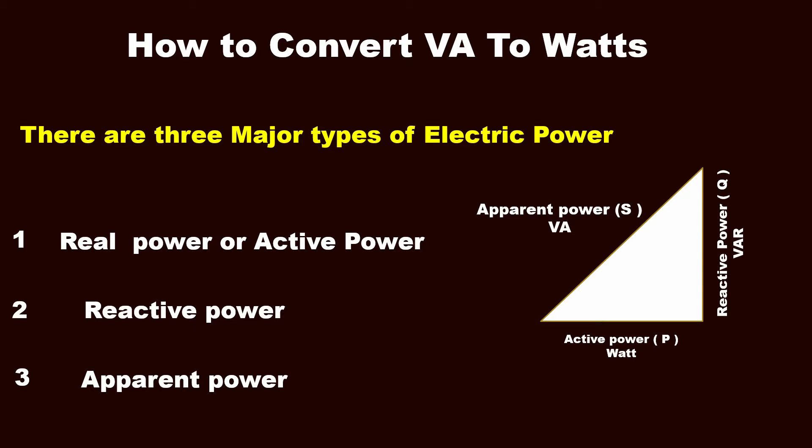Apparent power is denoted by S and its unit is volt-ampere or VA. Real power is denoted by P and its unit is watt.